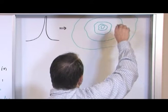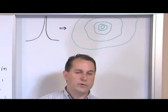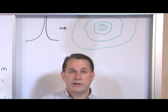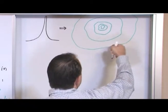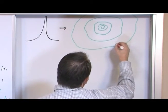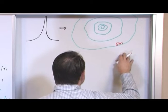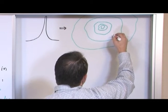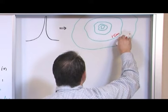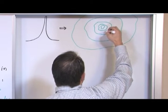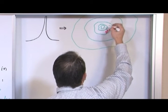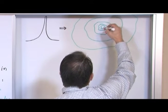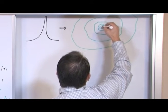Basically, each one of these lines is a line of constant elevation. This line all the way around could be, say, five meters above the ground. This one might be 15 meters above the ground, this one 30 meters, and this one 50 meters. The one in the center might be 100 meters — maybe the mountain is 100 meters tall.